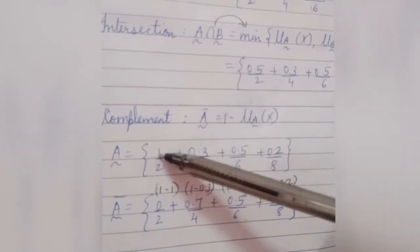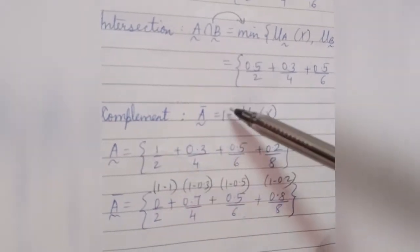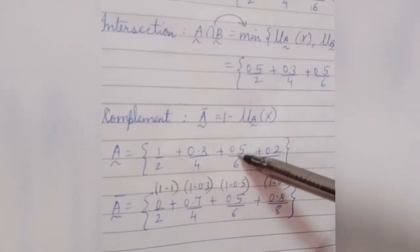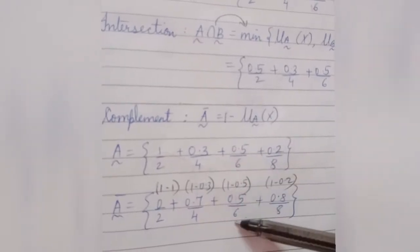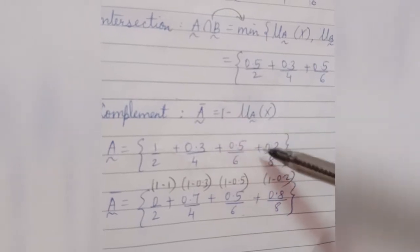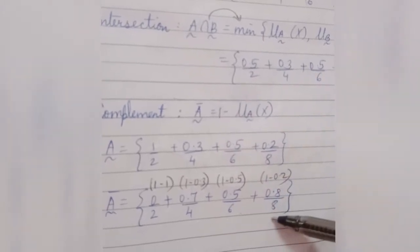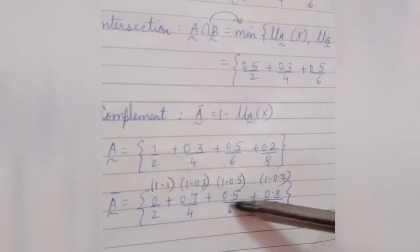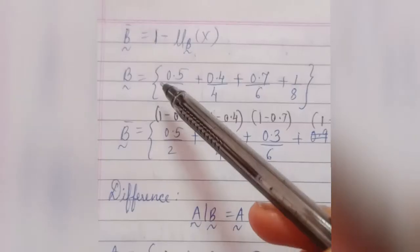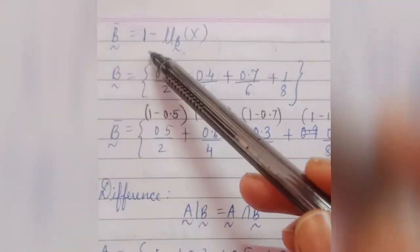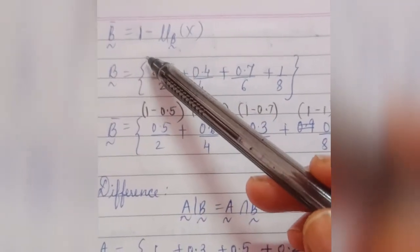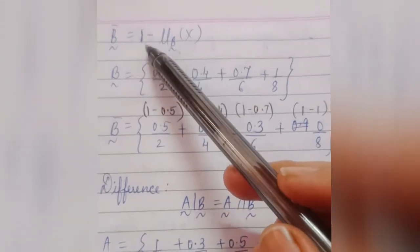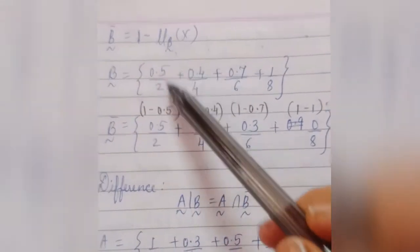For complement of A: 1 minus 1 is 0 upon 2, 1 minus 0.3 is 0.7, 1 minus 0.5 is 0.5 upon 6, and 1 minus 0.2 is 0.8 upon 8. This is fuzzy set A complement. For fuzzy set B complement, apply 1 minus μB(x) to each element of set B.